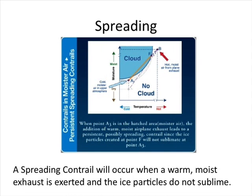Spreading contrail formation: When point A is in the hatched area, or the moisture area, the addition of warm, moist airplane exhaust leads to a persistent, possibly spreading contrail, since the ice particles created at point F will not sublimate at point A. These graphics are from the GLOBE website under contrail formations.